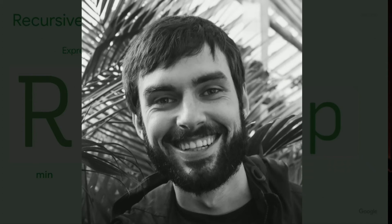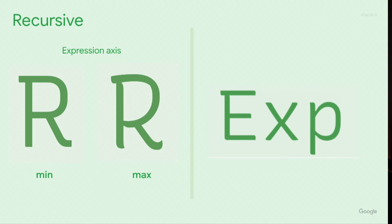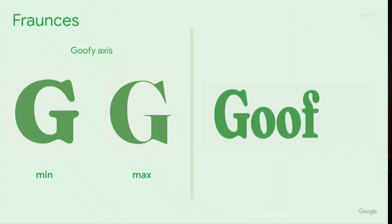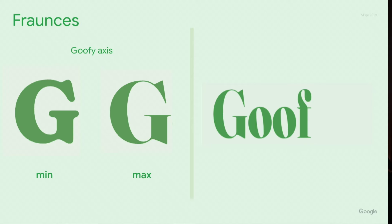Recursive is designed by Steven Nixon from Aerotype. It's a type family that maximizes font utility for code and design and provides a continuous range of design control axes with five axes, including proportion, expression, weight, italic, and cursive. To provide the most value in different contexts, the expression axis provides a spectrum of personality. Frances is a display old-style soft-serve typeface designed by Charles and Thorne. It's composed of Roman and italic and has three different axes, including optical size, weight, and goofy. The goofy axis gives access to chocolatey chunking forms, and it can be used for both subtle and bold headlines.